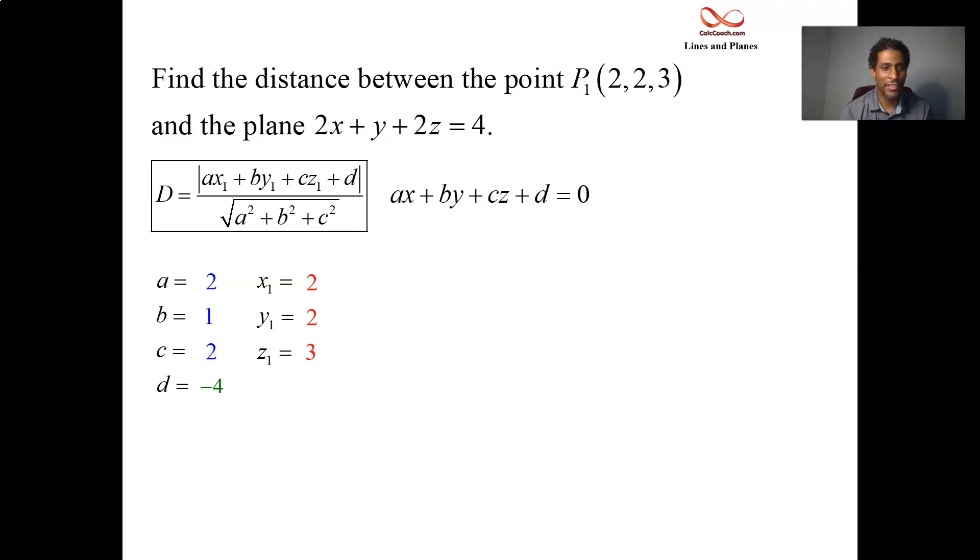So just plug in the players. 2 times 2, 1 times 2, 2 times 3, multiply nicely like that, take away 4. If it's negative, don't worry, the absolute value bar is around it. The denominator is the magnitude of the normal vector. So that's going to be 2 squared plus 1 squared plus 2 squared. And then take a square root.